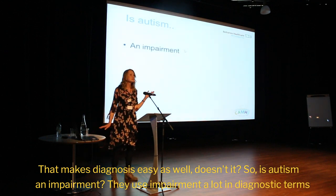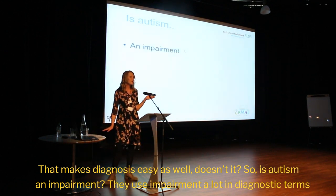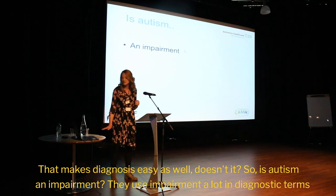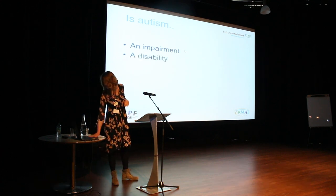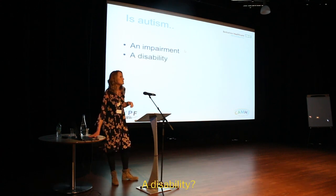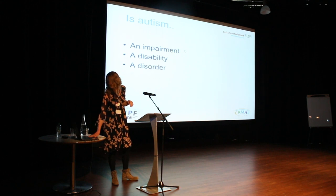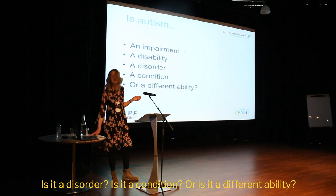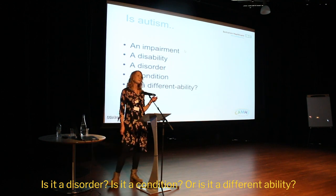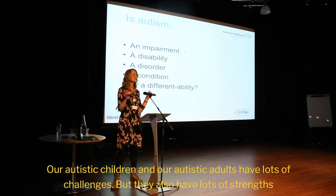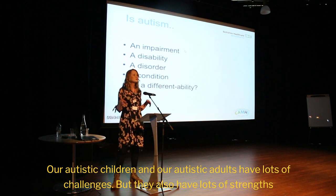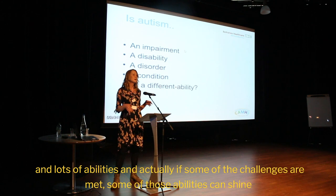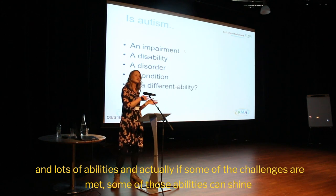Is Autism an impairment — a term used a lot in diagnostic language — a disability, a disorder, a condition, or a different ability? Our Autistic children and adults have lots of challenges, but they also have lots of strengths and abilities. And actually, if some of the challenges are met, some of those abilities can shine.